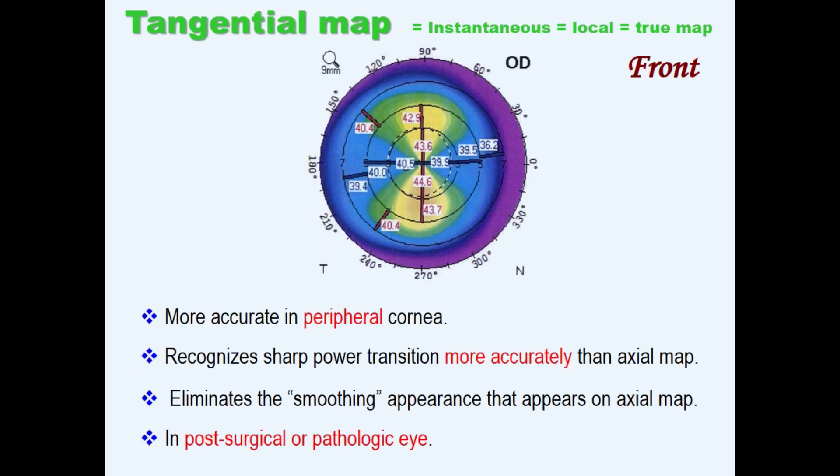Tangential or local maps are useful for evaluating the corneal shape, but are not recommended for routine use because the measurement noise can obscure the true optical quality of the cornea. However, these tangential maps are extremely useful in demonstration and measurements in both surgical and pathological corneas.